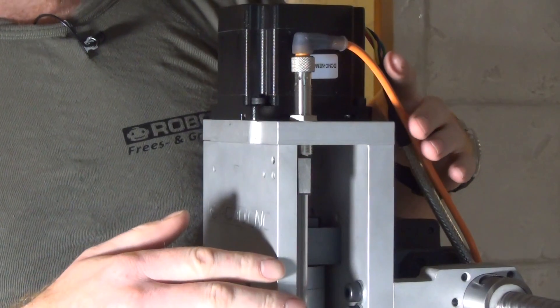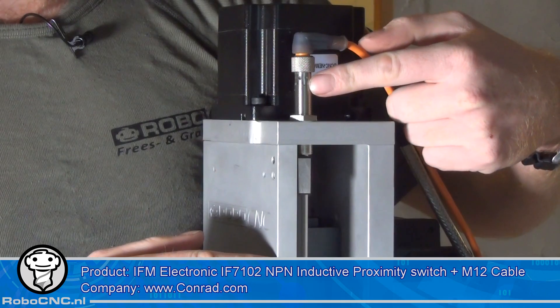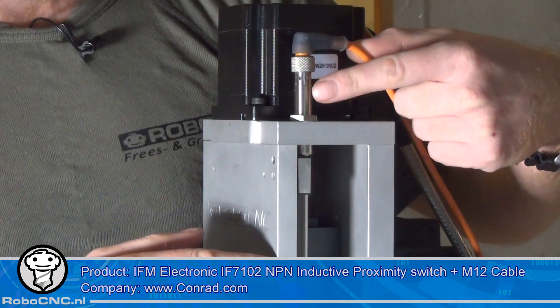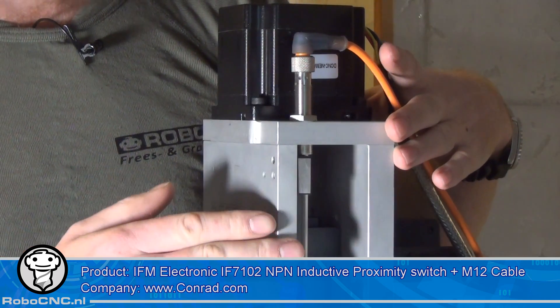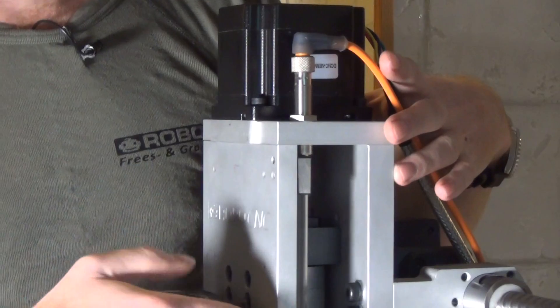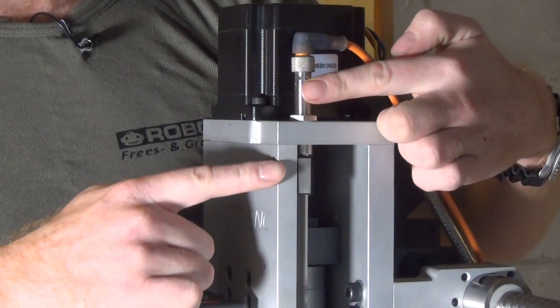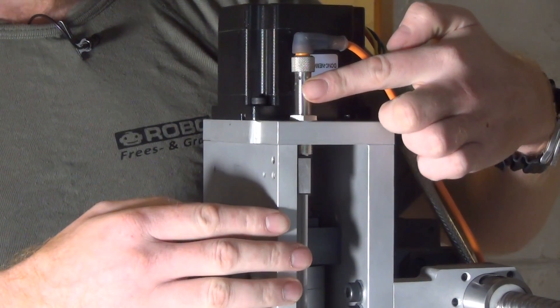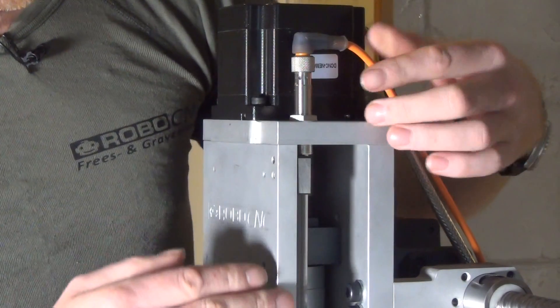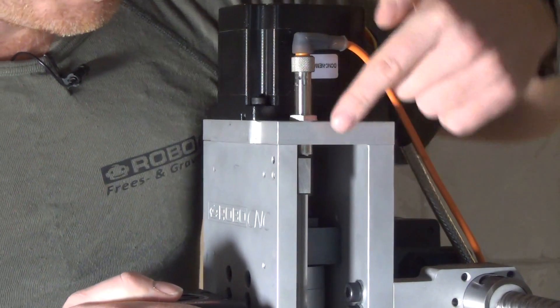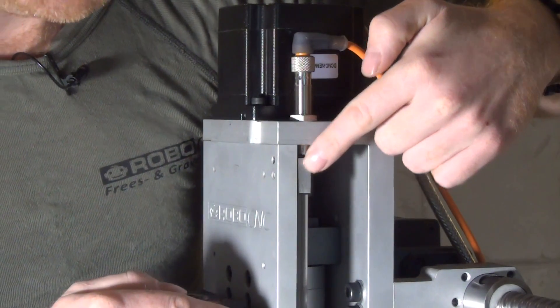So the last thing on this z-axis is the sensor here. It's an NPN proximity switch that tells us the home position of the z-axis. So when I tell the machine to home, the z-axis will go up until this sensor senses the front plate, and then it says okay, we're home, call it z-zero.